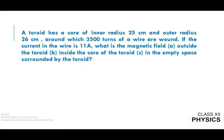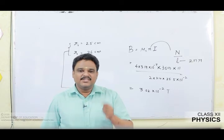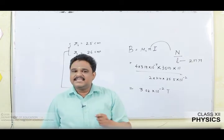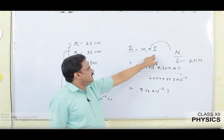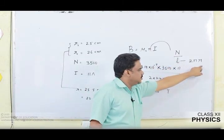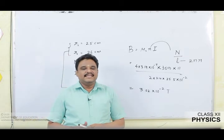To recap question 3: a toroid with inner radius 25 cm, outer radius 26 cm, 3500 turns, current = 11 ampere. The magnetic field is only non-zero inside the core. Using B = μ₀nI where the length is the circumference and r = 25.5 × 10⁻² m, the magnetic field inside the core is 3.02 × 10⁻² Tesla.